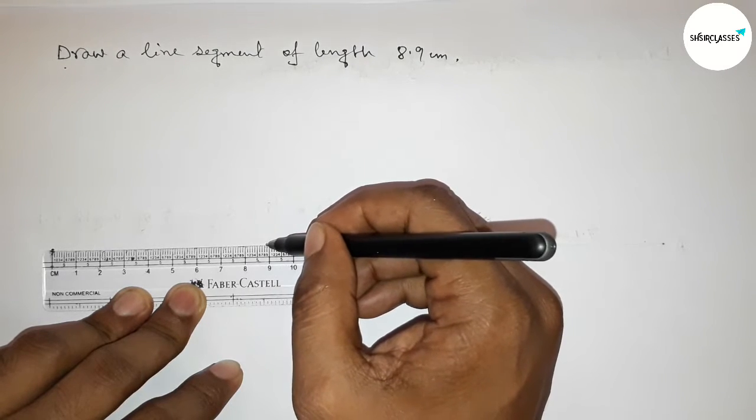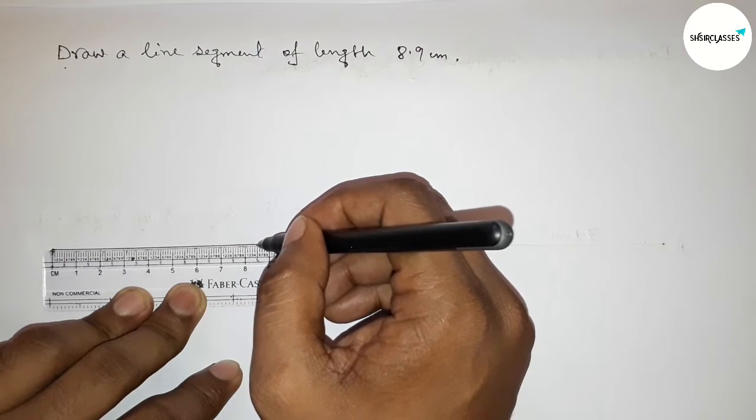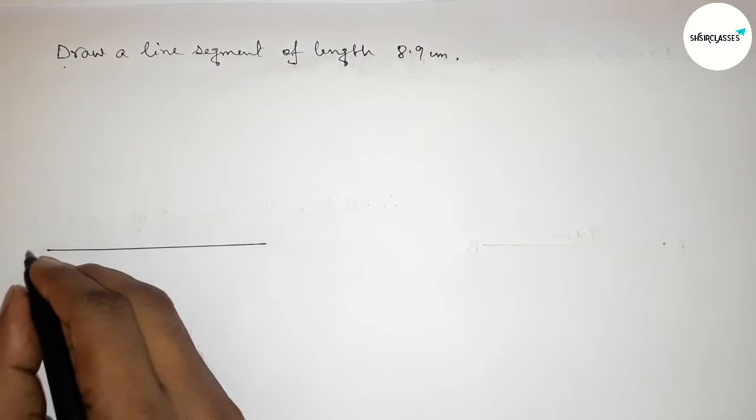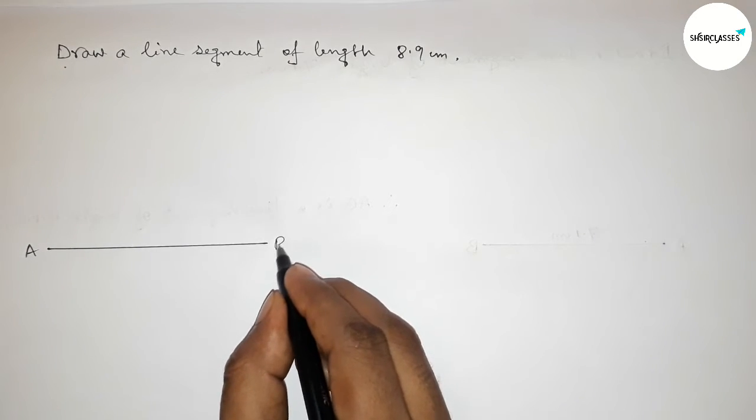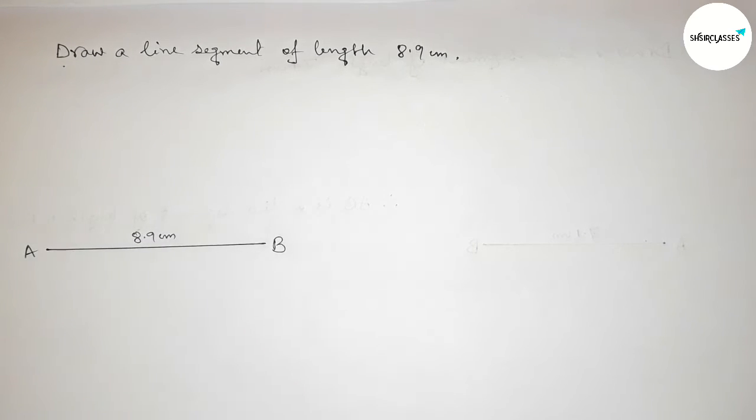First we have to mark eight point nine centimeters, then join the line perfectly. Taking here point A and here B, so AB equals to eight point nine centimeters.